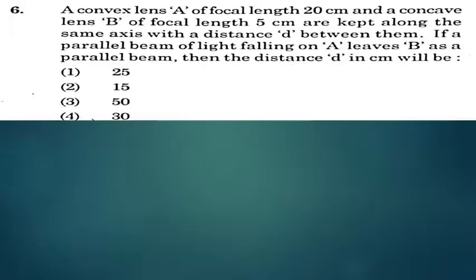Hi students, question number six, NEET 2021. A convex lens A of focal length 20 centimeters and a concave lens B of focal length 5 centimeters are kept along the same axis with a distance d between them. If a parallel beam of light falling on A leaves B as a parallel beam, then the distance d in centimeters will be...